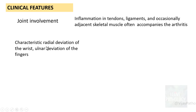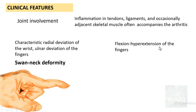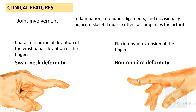In long-standing cases, there can be characteristic radial deviation of the wrist and ulnar deviation of the fingers, referred to as swan neck deformity. The second important clinical finding is flexion-hyperextension of the fingers, known as boutonniere deformity. Swan neck deformity and boutonniere deformity are important clinical features identified in rheumatoid arthritis.